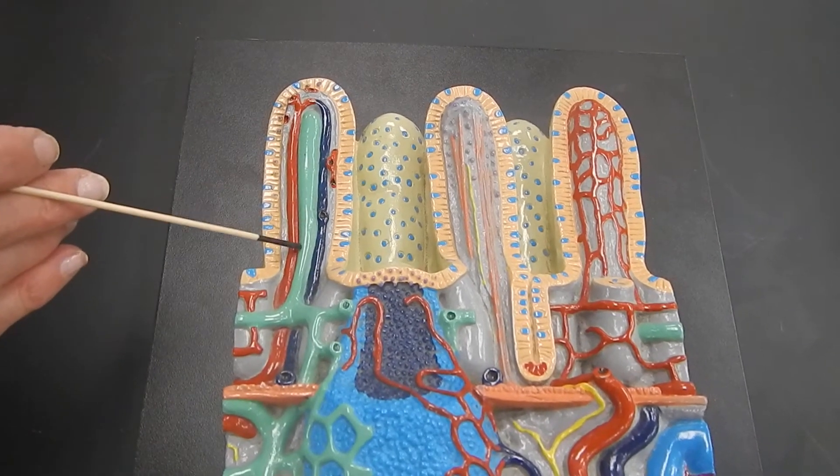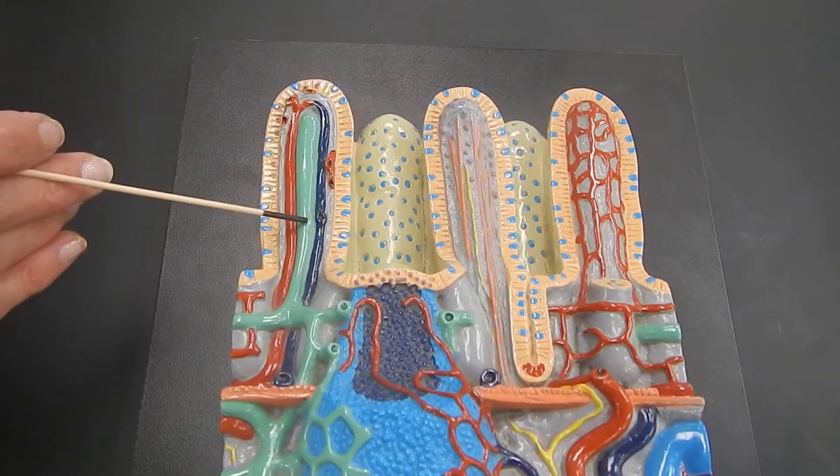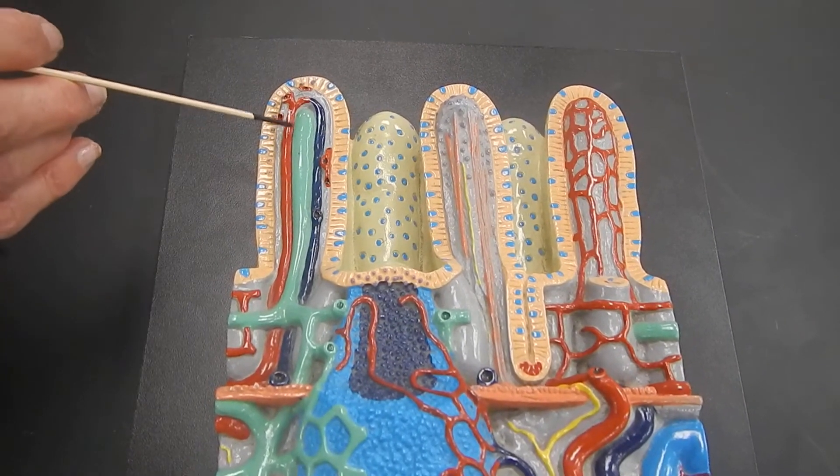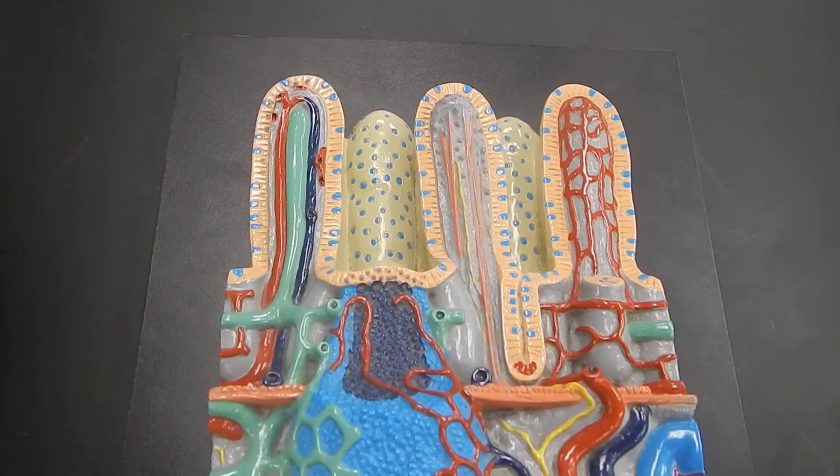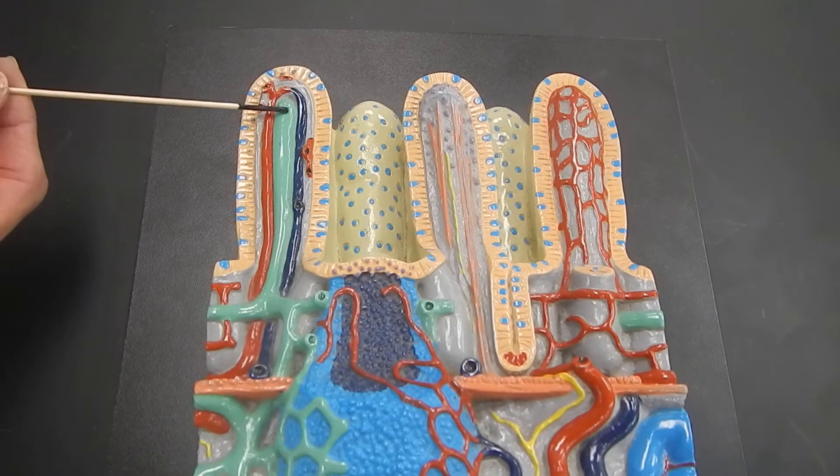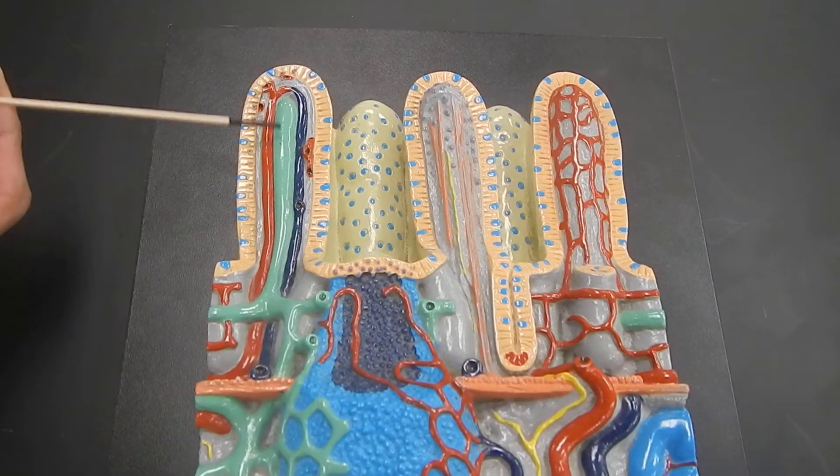This green structure is called a lacteal. And the lacteal is a lymphatic vessel. Any of the fats from your meal that are being absorbed would be absorbed into the lacteal.